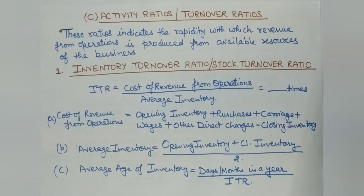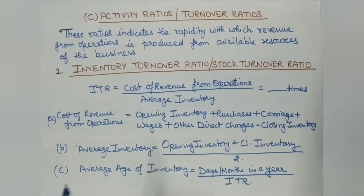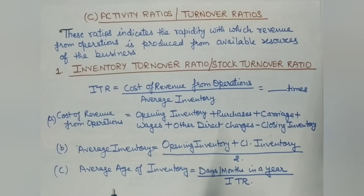Turnover ratios or activity ratios — as we have seen in the previous lecture, the first category, liquidity ratios, is used to find out the short-term financial position of a business: creditworthiness, whether obligations can be paid within one year or immediately. Solvency ratios, on the other hand, deal with long-term financial efficiency and long-term solvency.